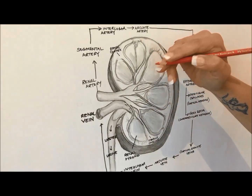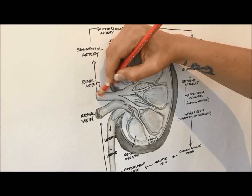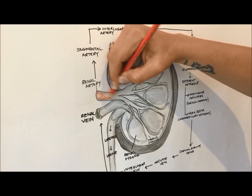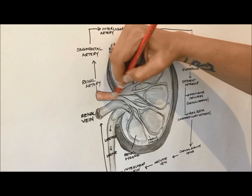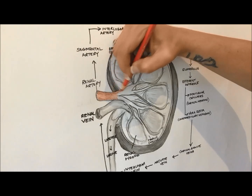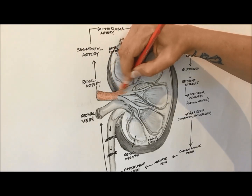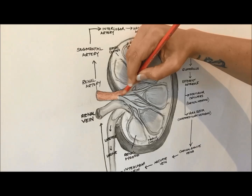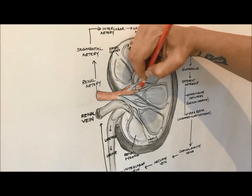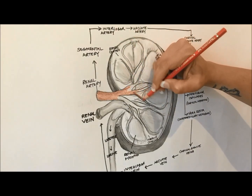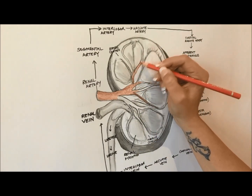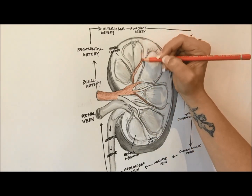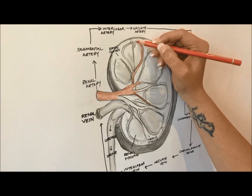Oxygenated, unfiltered blood flows into the kidneys through the renal artery that arises from the aorta and divides into several segmental arteries that enter the renal hilum. Each segmental artery then branches into interlobar arteries that pass through the renal columns between the renal lobes, entering the functional portion of the kidney, collectively known as the parenchyma, which constitutes the renal cortex and renal pyramids of the renal medulla.